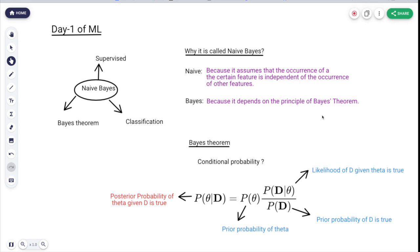Bayes theorem actually uses the principle of conditional probability. What is conditional probability? It actually means that if you are given an instance and you want to find the probability of another instance that is dependent on the previous instance, that will be actually a conditional probability.